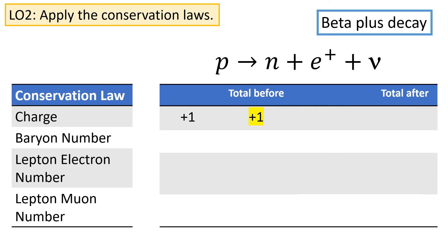We can do a very similar thing for beta plus decay. My advice now is to get out a pen and paper and pause the video — have a think for yourselves how each of these conservation laws will apply to beta plus decay. Once you've written something down, I'll come back and give you the answers.